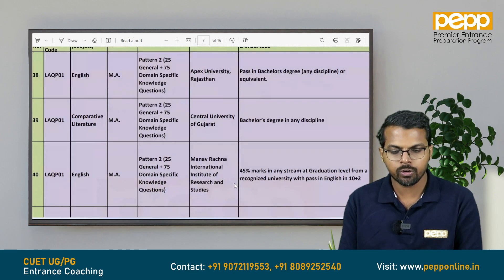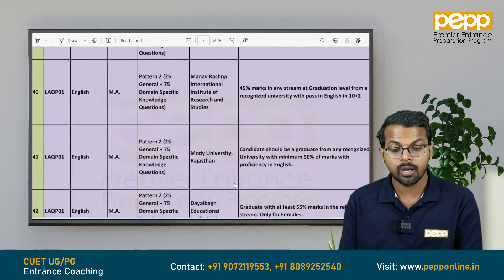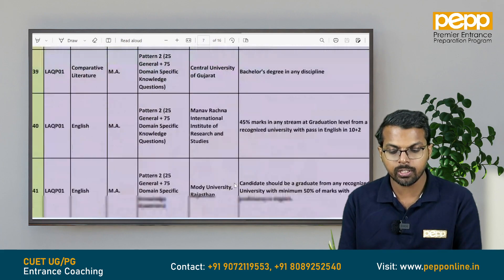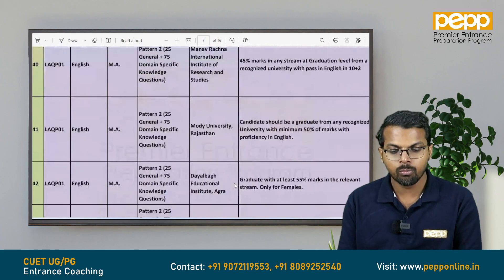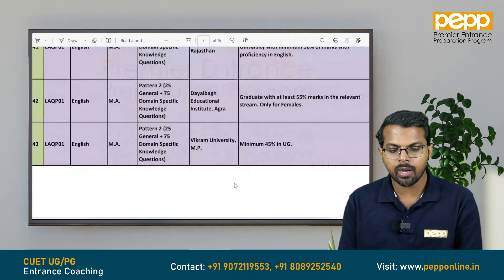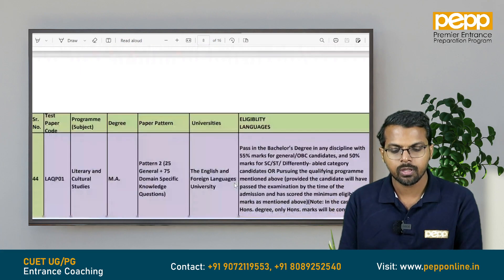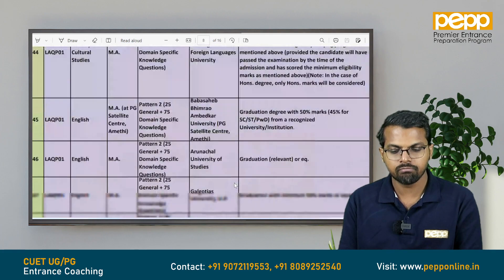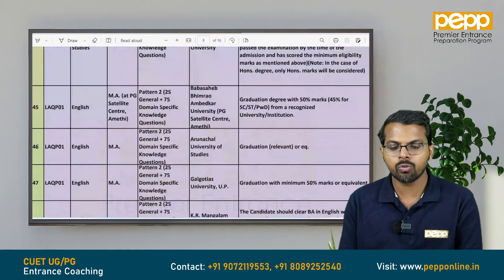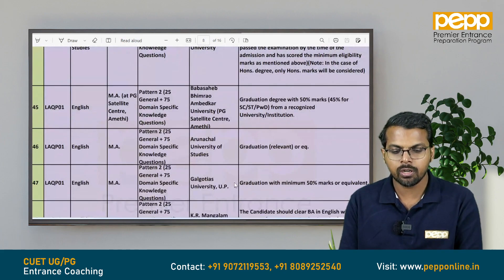Central University of Gujarat. Manavirajana International Institute of Research Studies — MA English, Comparative Literature. Central University of Gujarat. Moody University, Rajasthan. Dayal Bagh Educational Institute, Agra. Vikram University, Madhya Pradesh. Babasaheb Bhimrao Ambedkar University PG Satellite Center — MA English. Arunachal University of Studies. Calcutta University.